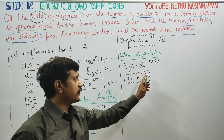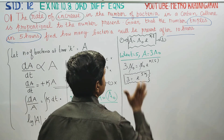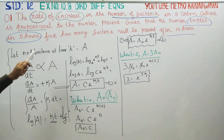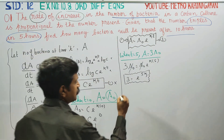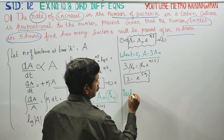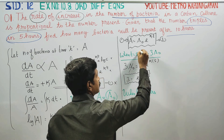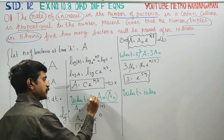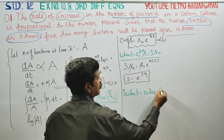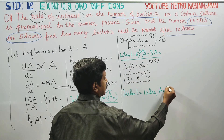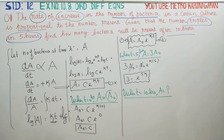So e^(5k) equals 3. That is the answer for e^(5k). Now, the final question: find how many bacteria will be present after 10 hours. When t is equal to 10 hours — starting from t equals 0 (experiment start), then t equals 5 hours, then t equals 10 hours — that is the last stage.